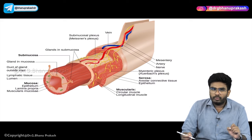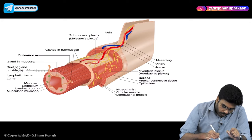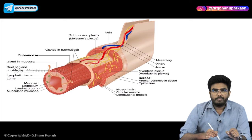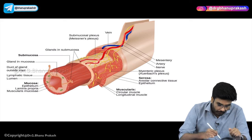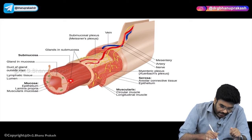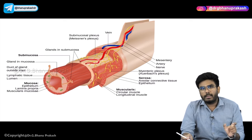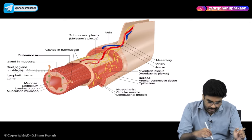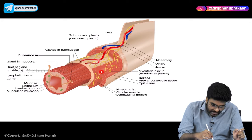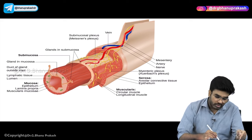Now there are some important points. Mucosa is further divided into: the epithelial layer, lamina propria, and muscularis mucosae. This word muscularis mucosae is important. The actual muscularis layer is different - muscularis mucosae is different.